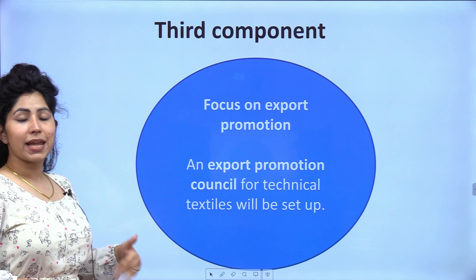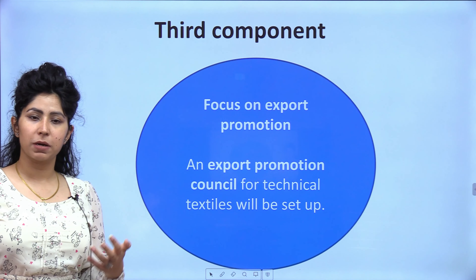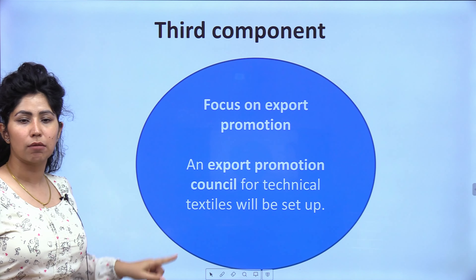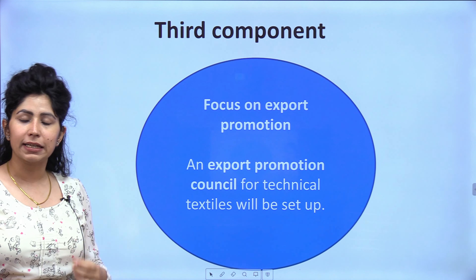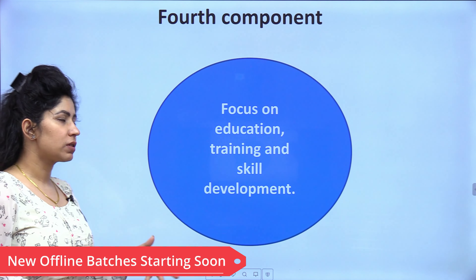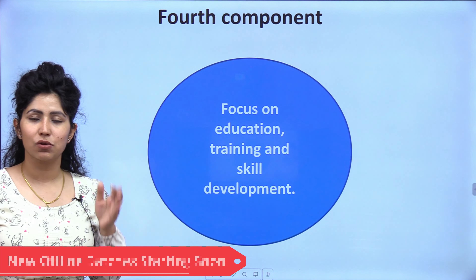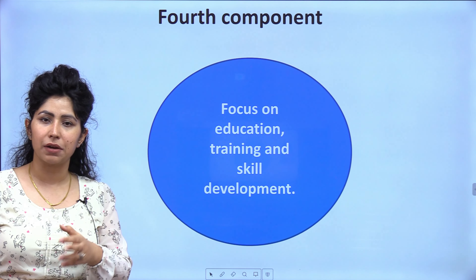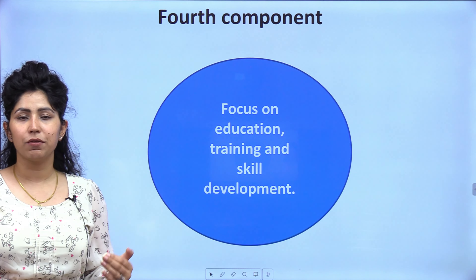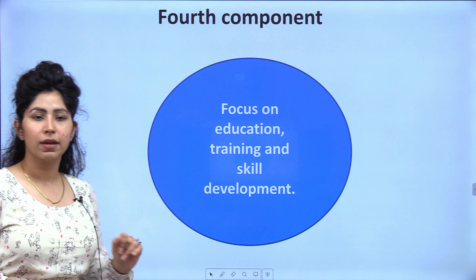Third component: focus on export promotion — not just the domestic market. An export promotion council for technical textiles will be set up. Fourth component: focus on education, training and skill development, so that people are available in the country to work in this industry, leading to lesser unemployment and more employment opportunities.